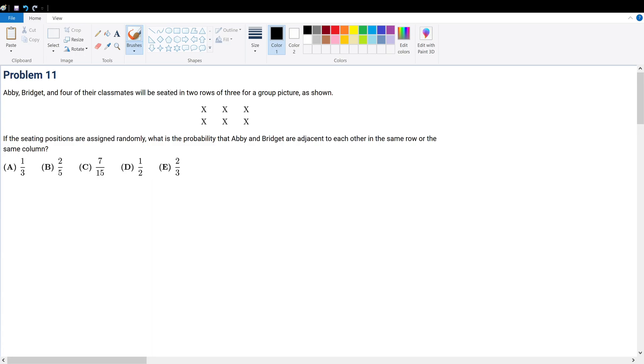If the seating positions are randomly assigned, what is the probability that Abby and Bridget are adjacent to each other in the same row or column?